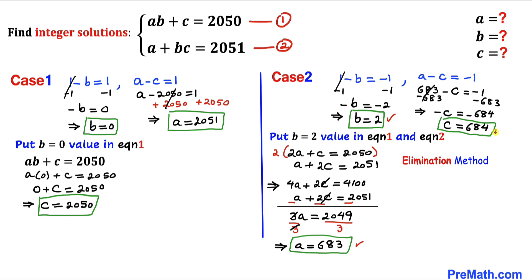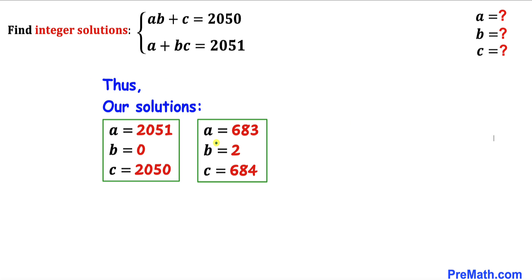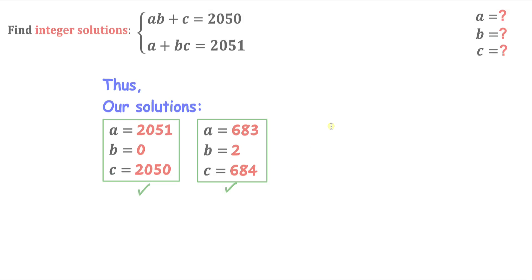So for Case 2: a = 683, b = 2, c = 684. Here's our complete set of solutions — Case 1 and Case 2. Thanks for watching, and please don't forget to subscribe to my channel for more exciting videos.